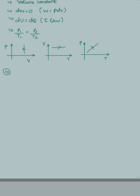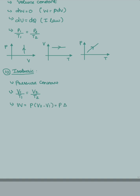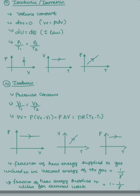The next process is the isobaric process, where pressure remains constant — 'baric' means pressure. The corresponding gas law is V1/T1 = V2/T2. Work done in this process is P × ΔV, which can also be written as NR(T2 - T1), since PV = NRT. In the graphs, pressure remains constant for different values of volume, and volume is directly proportional to T, giving a straight line.